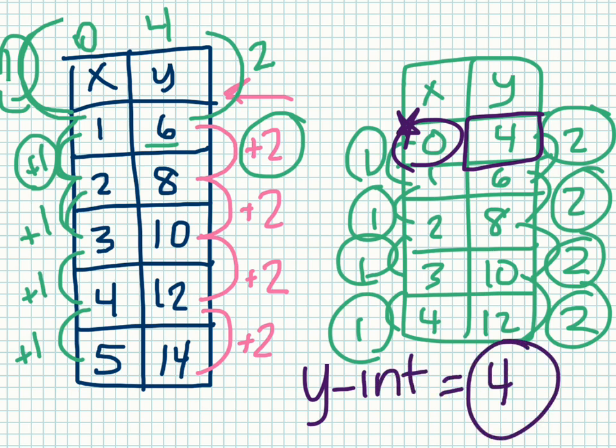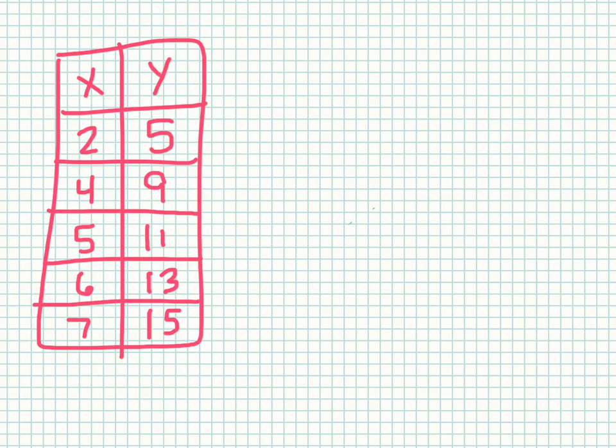So now I have my y intercept even though my original table didn't have when x equals 0. I extended my table to find my y intercept. Now here I have another example of a table where I don't have a value for when x equals 0. So right now I don't know what my y intercept is, but I'm going to extend my table to include when x equals 0.